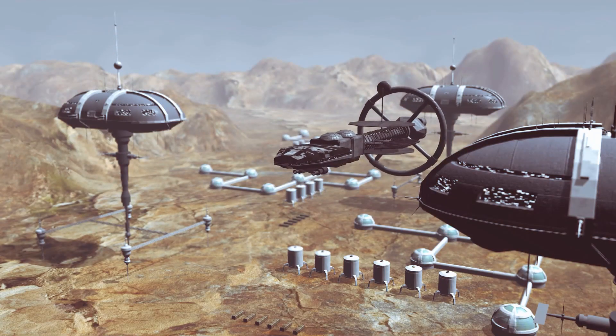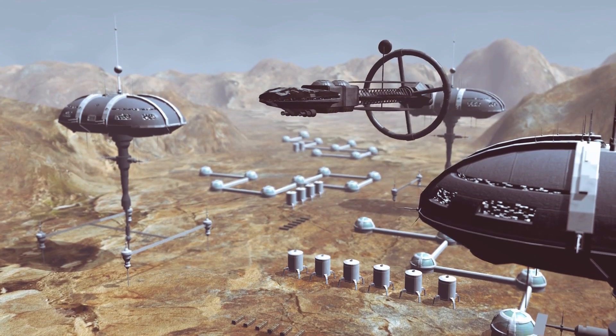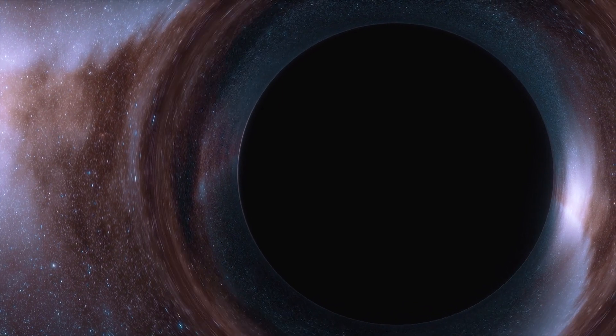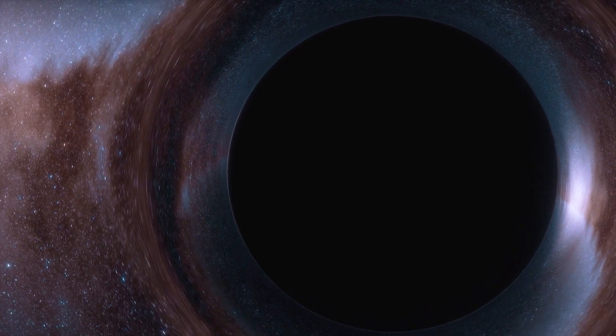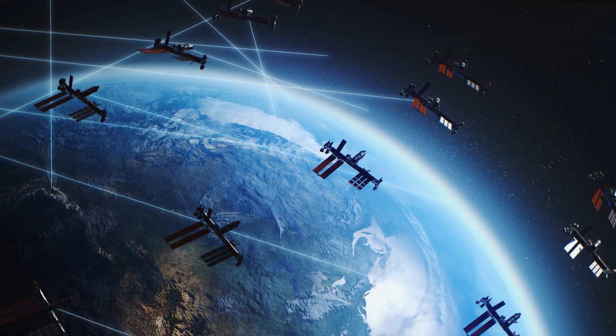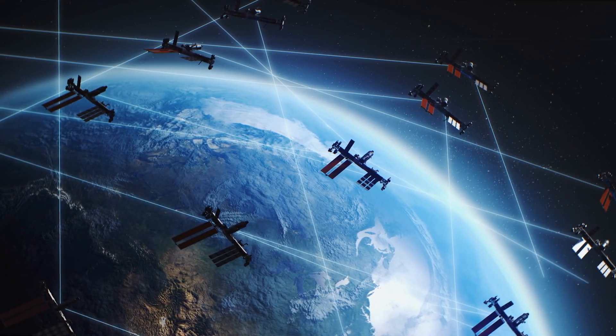While it may seem unlikely, given Proxima B's close proximity to its host star, the planet may be tidally locked with one side always facing the star and the other side in constant darkness. This could lead to a culture evolving on the illuminated side that places significant emphasis on lighting.